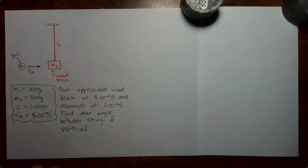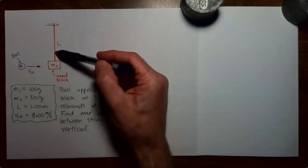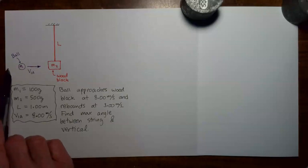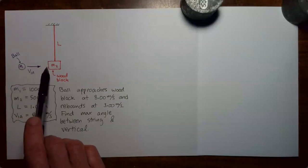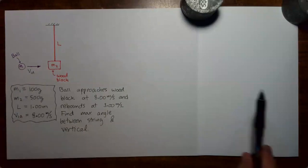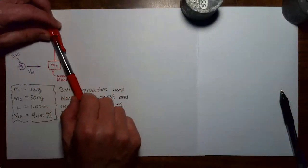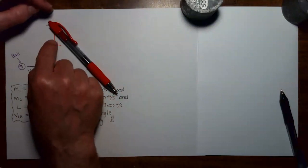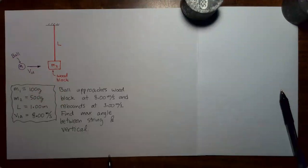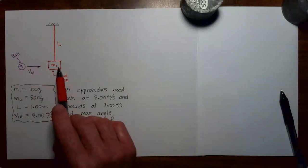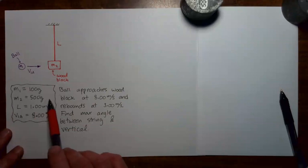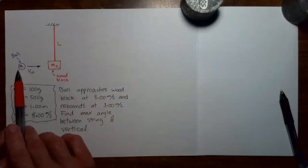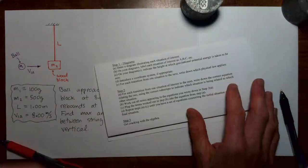Let's look at the problem. We have a string, and at the end of the string we have a wood block. At the moment, that wood block is just resting there, but we have a ball that's going to come in from the left moving rightward. It's going to strike the wood block and then rebound to the left. Because of the collision, that wood block is going to begin to swing upward at the end of its string, and we want to know, as that wood block swings upward, what is the maximum angle between the vertical direction and the string? We are given: the ball has mass 100 grams, the block has mass 500 grams, the length of the string is one meter, and the ball is coming in moving rightward at eight meters per second.